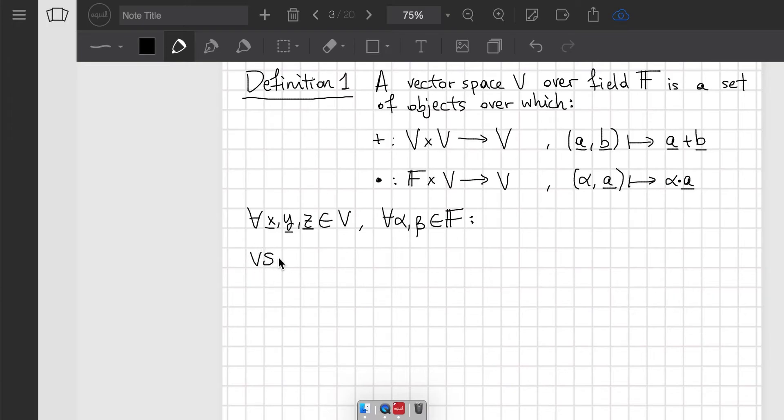So VS1, this is the first condition, and it says that addition is closed. What that means is if we take x plus y, then this must belong to V. And similarly, VS2 states closure of scalar multiplication. So if I take alpha and multiplied by x, then this must also belong to V.